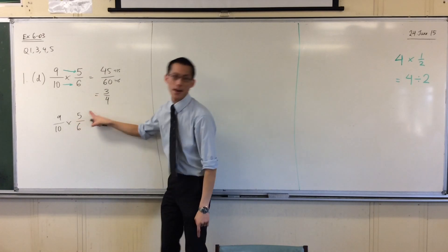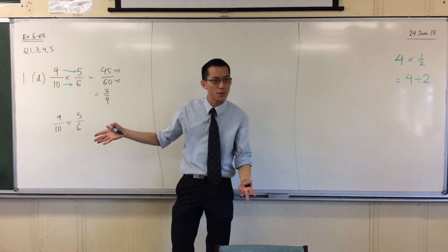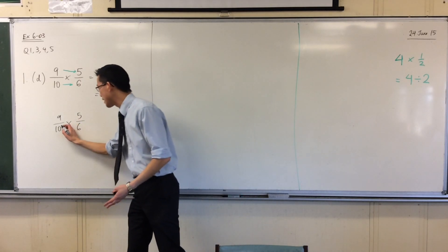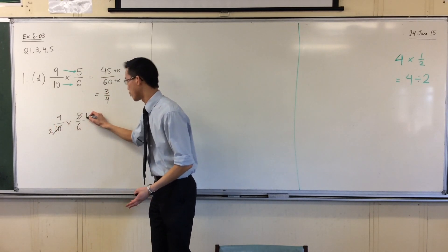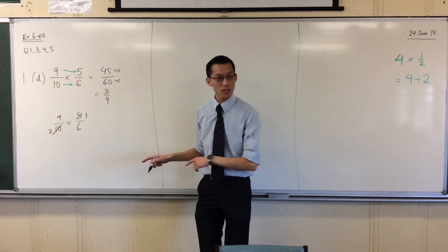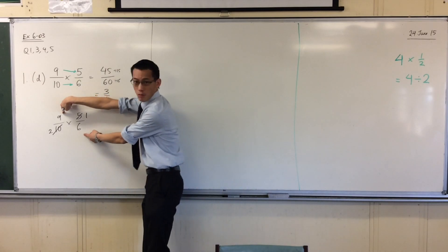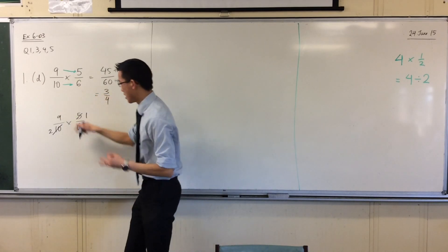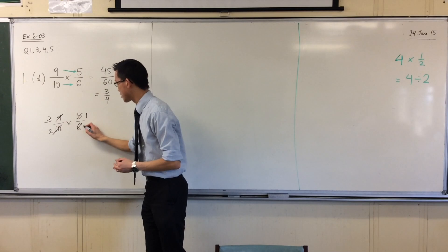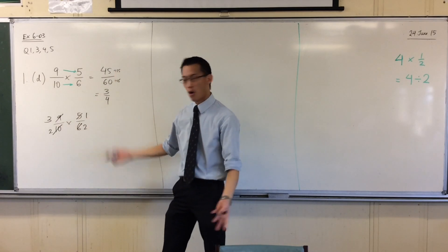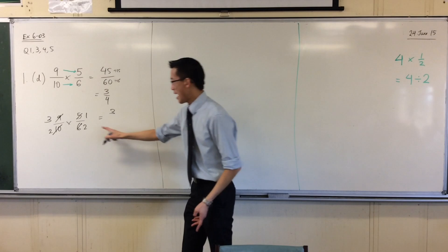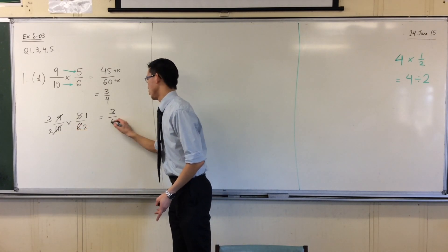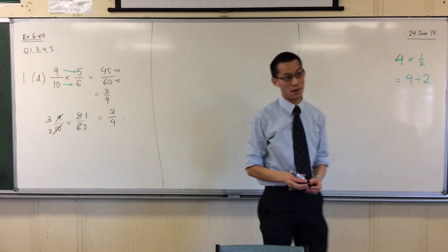So for instance, I see 10 and 5, both multiples of 5, right? So I would replace this 10 with a 2 and I would replace the 5 with a 1. I can also do it with these two, right? What's the common divisor? 3. I'd replace this with 3 and this with 2. So now all I'm left with is 3 times 1 and 2 times 2, which is a lot easier to compute.